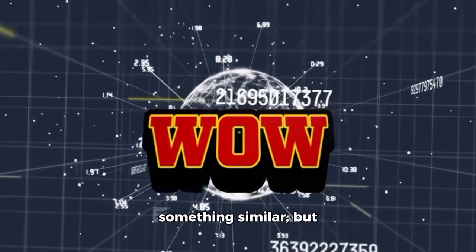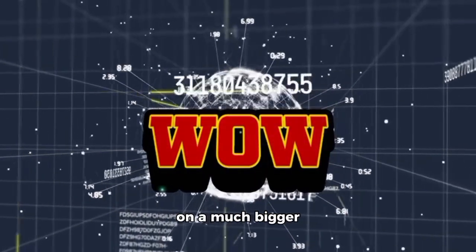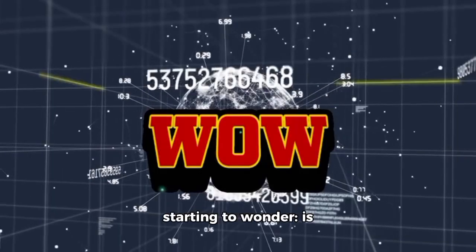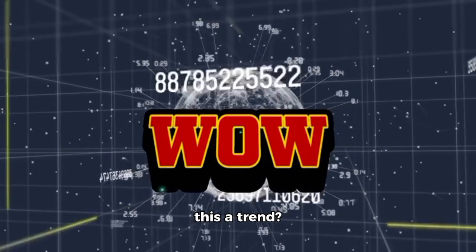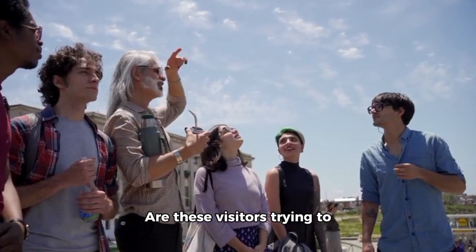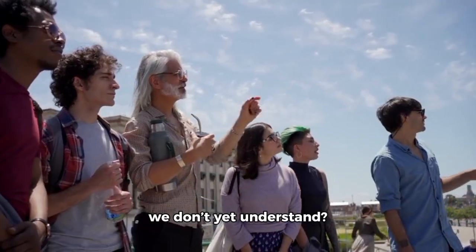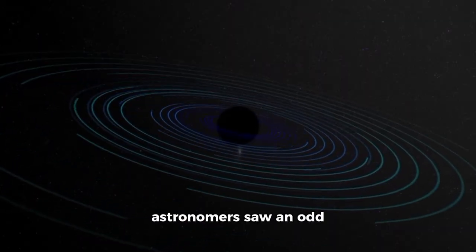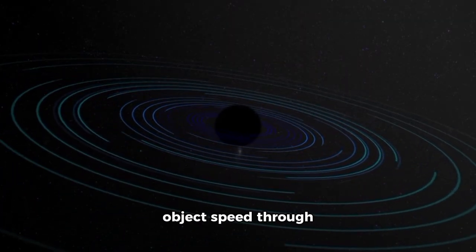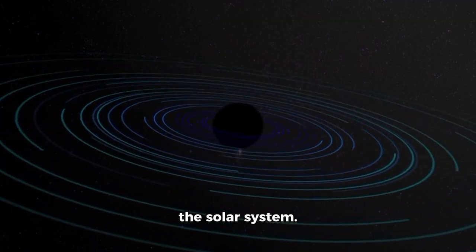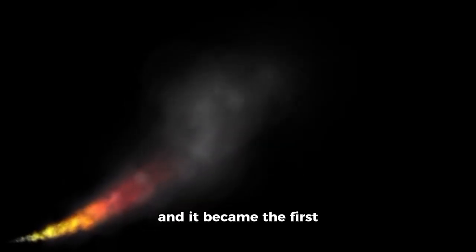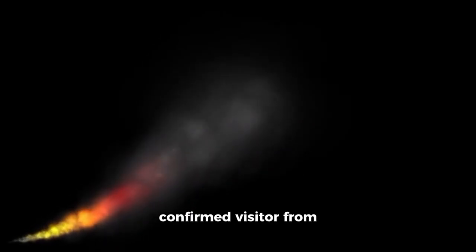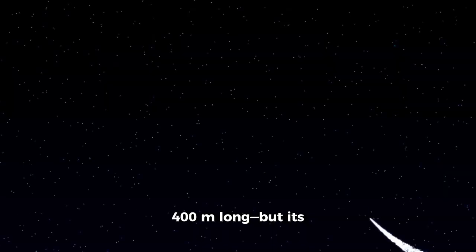Now, with Atlas doing something similar but on a much bigger scale, scientists are starting to wonder, is this a trend? Are these visitors trying to tell us something about space we don't yet understand? In October 2017, astronomers saw an odd object speed through the solar system. It was named Oumuamua, and it became the first confirmed visitor from another star system.